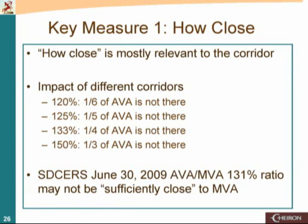The two measures: 'within a sufficiently narrow range' means how close is it? How close is mostly relevant to the corridor decision. The impact of different corridors — if you have a 120% corridor, you're saying if your smooth value is 120% of your market value, one-sixth of the actuarial value of assets you're using in funding isn't even there. If you move it up to 150%, it's one-third of your assets that aren't really there in market value. The June 30th, 2009 SDSURGE ratio of 131% may not be sufficiently close to MVA. I don't think we've finalized a recommendation or decision on that. There's still discussions going on in actuarial circles — it's a subject of debate amongst actuaries nationwide.